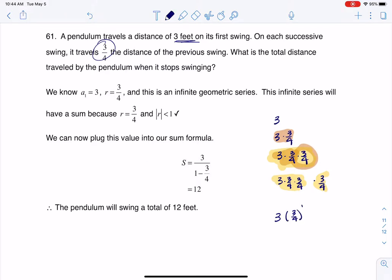Because this would be three times three-fourths to the n minus one, if we start here at n equaling one: first swing, second swing, third swing, fourth swing. And if I want to think about the total distance that it's going...